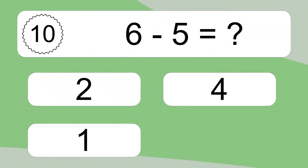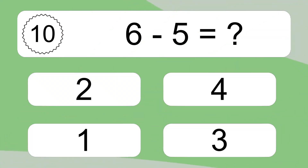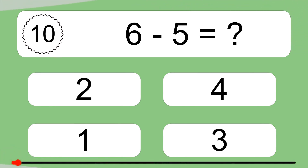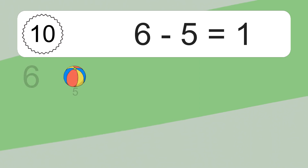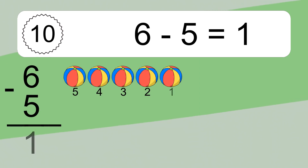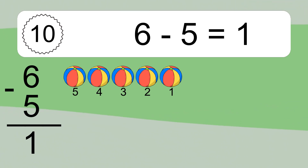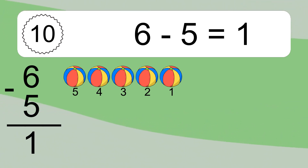6 minus 5 equals what? 6 minus 5 equals 1. Let's count it. 5, 4, 3, 2, 1.